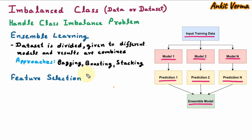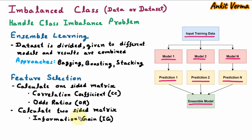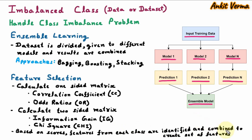The next technique to handle the class imbalance problem is feature selection. In feature selection, we calculate one-sided metrics like correlation coefficient and odds ratios. We also calculate two-sided metrics like information gain and chi-square. From all these metrics, scores are taken, and based on the scores some significant features from each class are identified. These features are combined to create a set of features. So using feature selection, different metrics are taken, their scores are taken, specific features are combined, and because of these features we can give the correct prediction and handle the class imbalance problem.